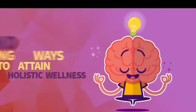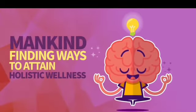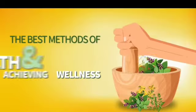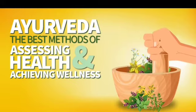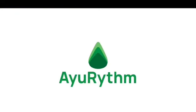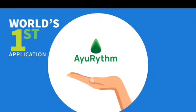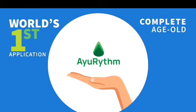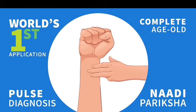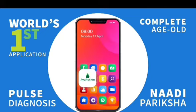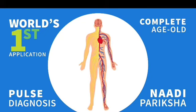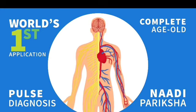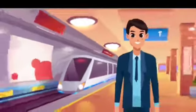For centuries, mankind has been finding ways to obtain holistic wellness, and Ayurveda is one of the best methods of assessing health and achieving wellness by different methods. Ayurhythm is the world's first application where one can complete the age-old and renowned Nadi Pariksha, or pulse diagnosis, via any smartphone or wearables for assessment of health parameters and finding ways to holistic wellness.